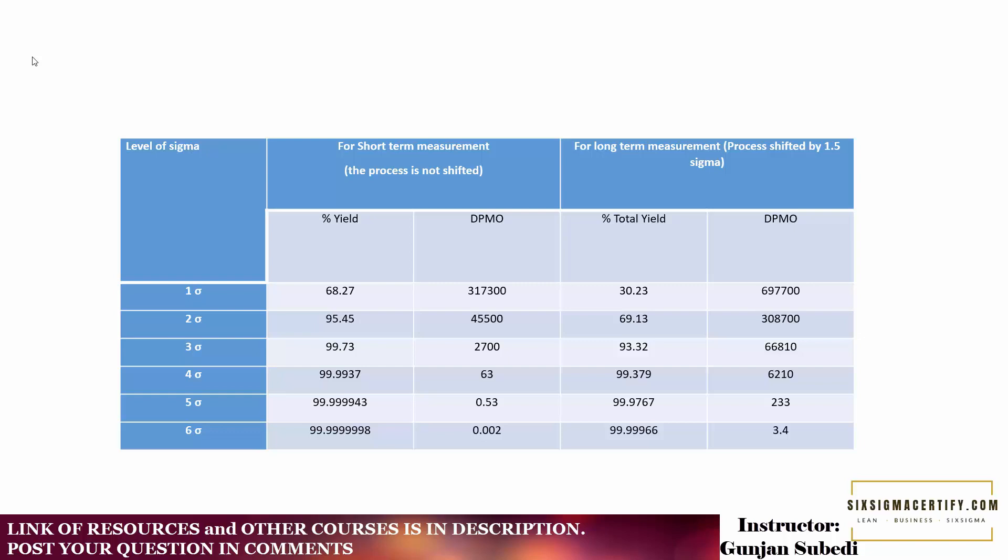So if you are operating at 1 Sigma level, then you will have a higher DPMO and lower yield. As you go on improving the process, as you go towards the Six Sigma level, which is the main motto behind this course, you are learning the Six Sigma and Lean Six Sigma course. As we go on increasing the Six Sigma level, you will notice that the DPMO or defects per million opportunities actually decreases and it increases the percentage yield.